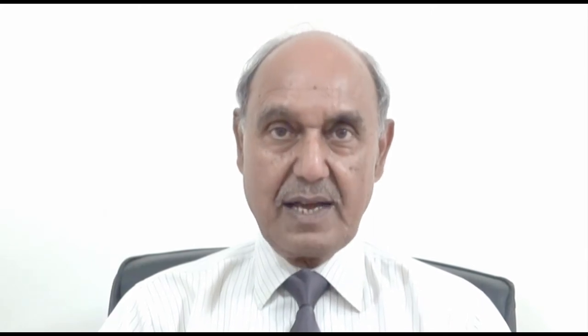If speed is being reduced in two stages, both reductions may be provided at the center of axle. It is also possible to provide one stage of reduction at the center of axle and the other stage at the road wheels. Referring to the diagram, this is double reduction final drive. The bevel pinion PI is driven by the propeller shaft. It meshes with crown wheel CW. The crown wheel CW is fixed to lay shaft LS.